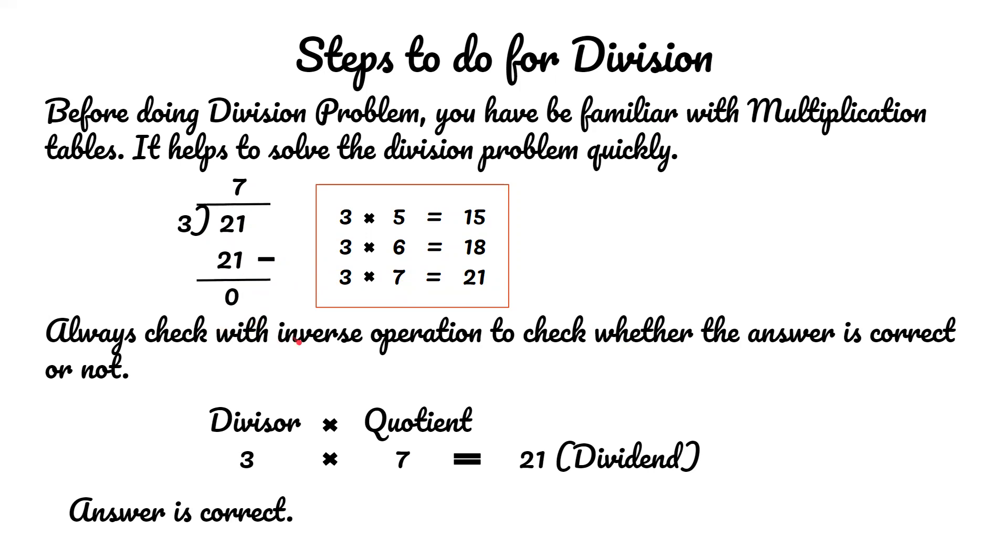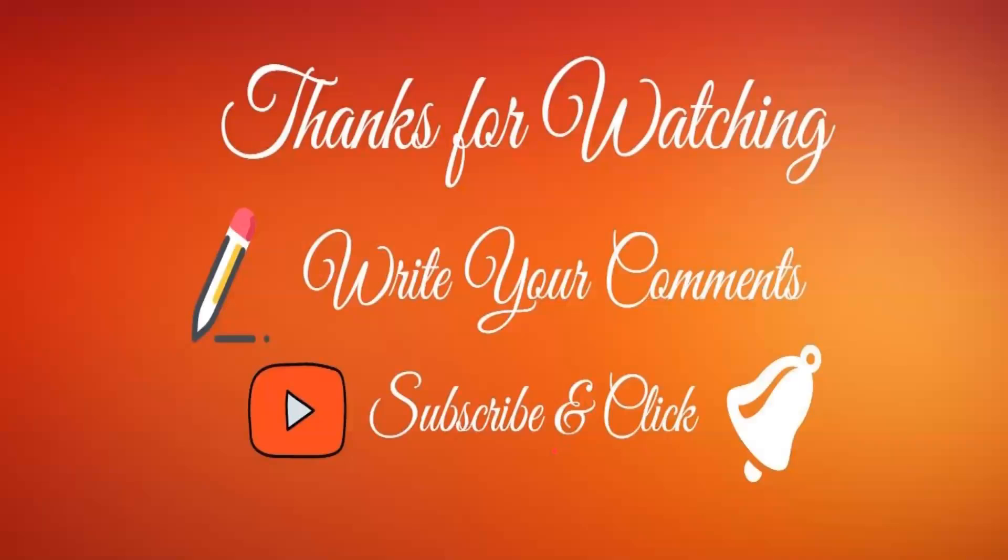Always check your answer using the inverse operation to verify if it's correct. Multiply the divisor and quotient: 3 times 7 equals 21, which is the dividend value. So the answer is correct.